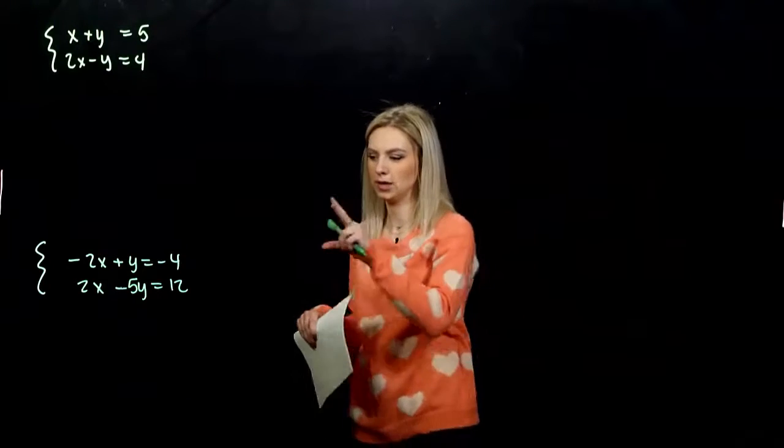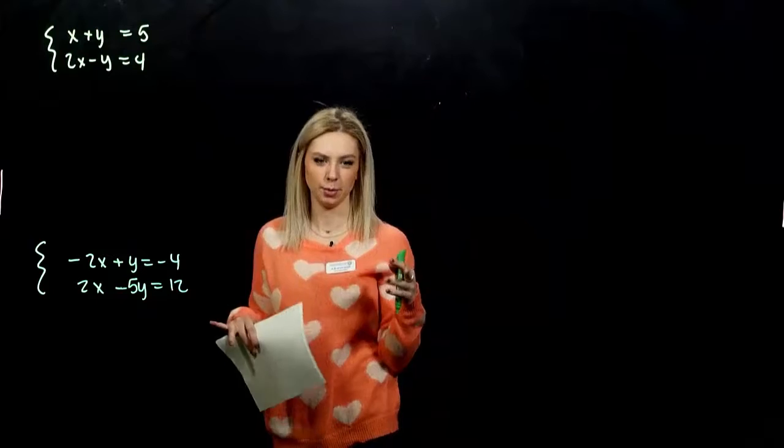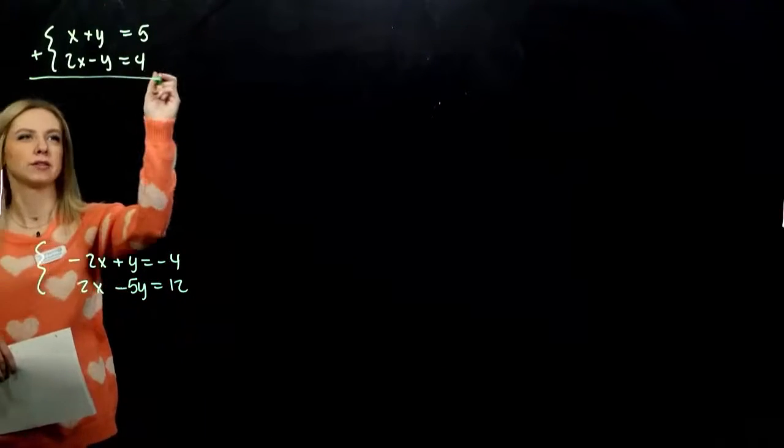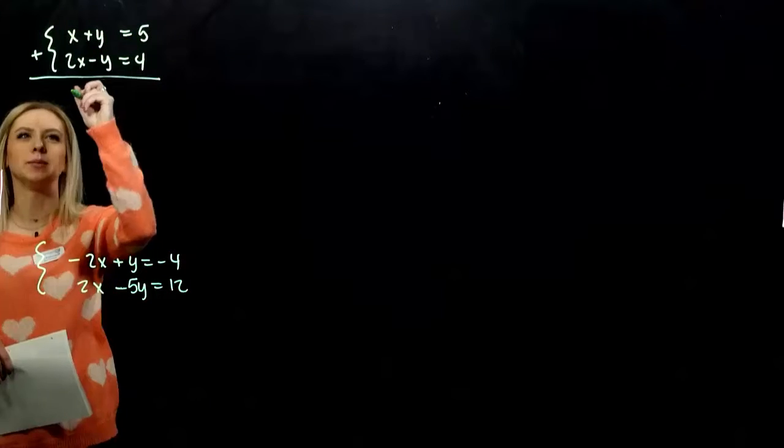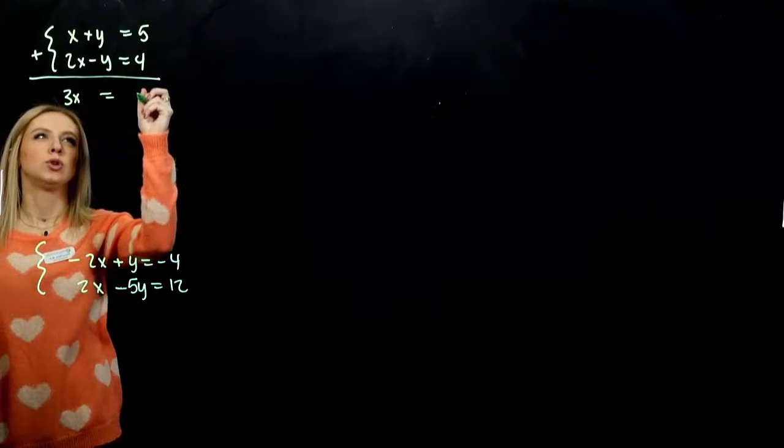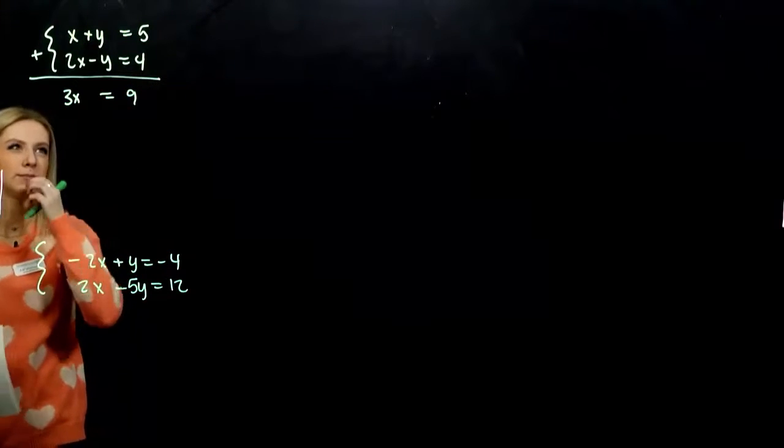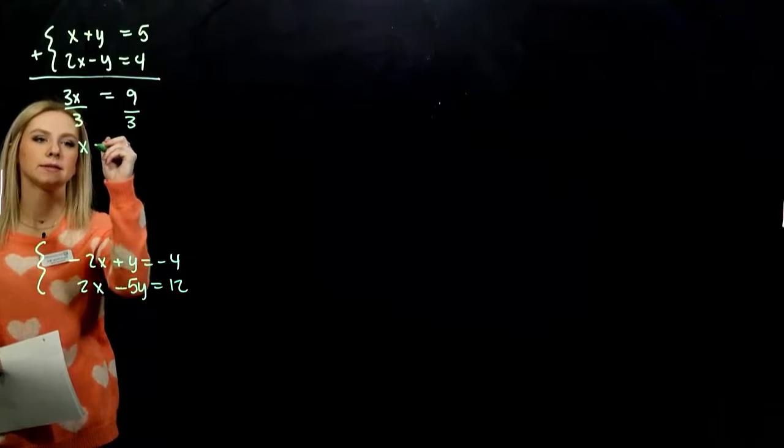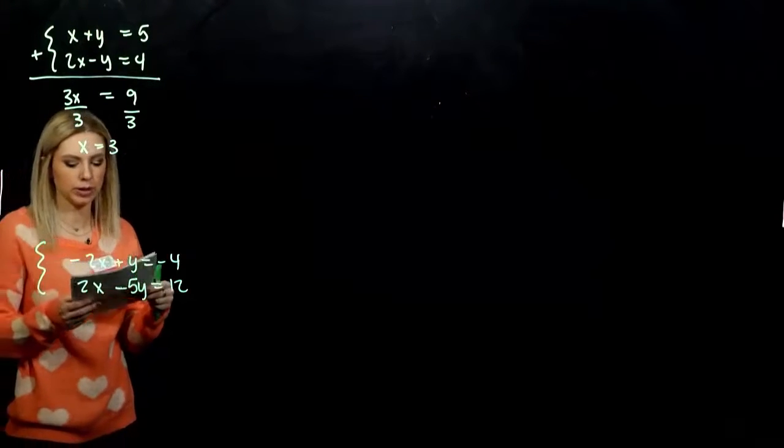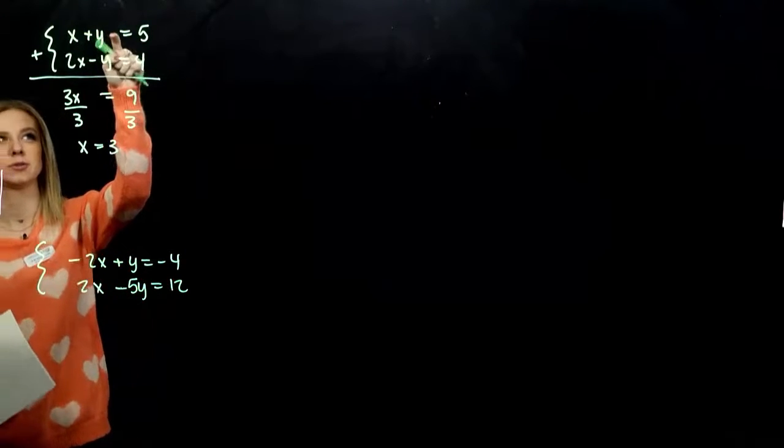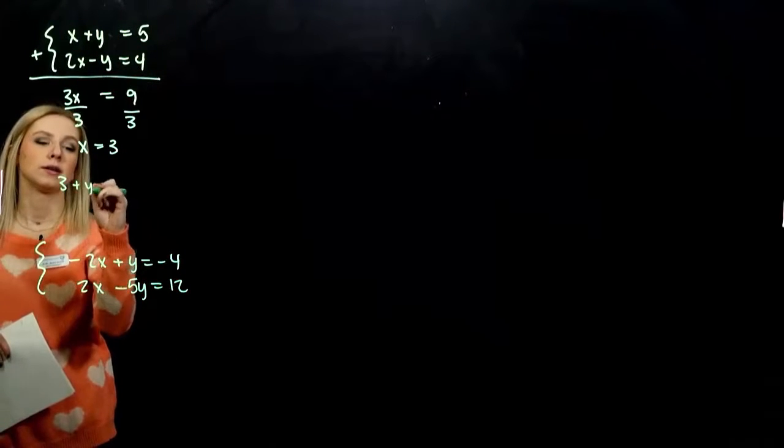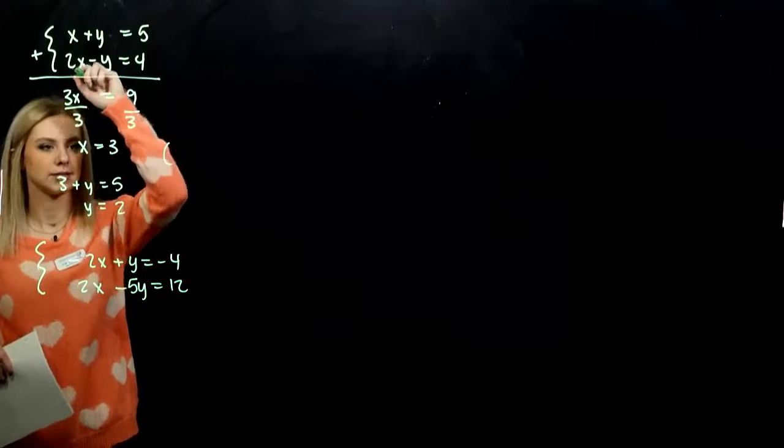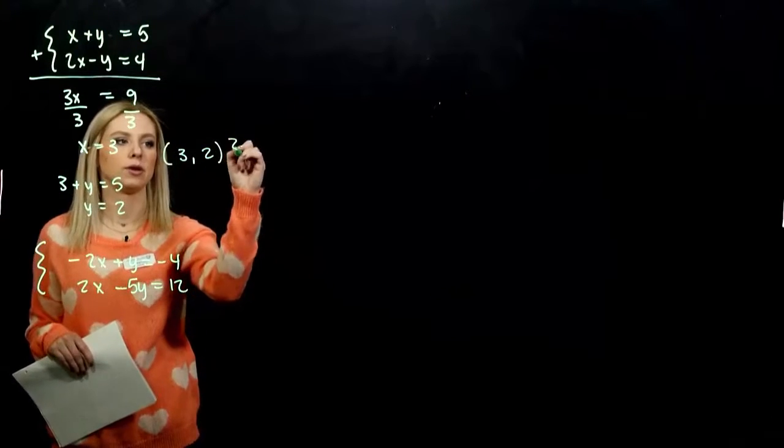So what did you notice about these two? We eliminated different variables in both cases, but we still got solutions. Because when we add those first two together, it's already in the standard form, y is going to be eliminated. So I have 3x is equal to 9. The y's are gone. You can divide by 3. x is equal to 3. And when we have that, we can plug it back into either equation. This one's going to be the easiest. 3 plus y is equal to 5. So y is equal to 2. So the solution to this system, they cross at that one point through 3, 2.